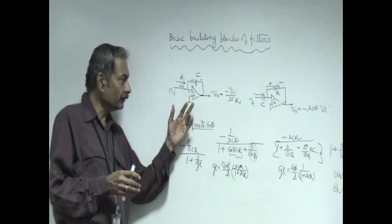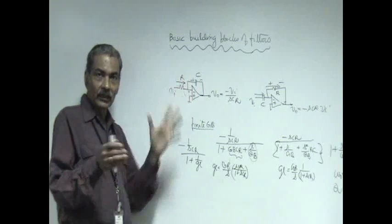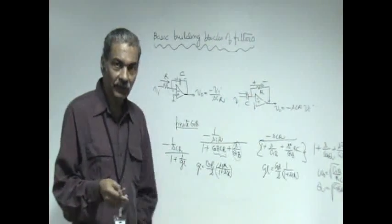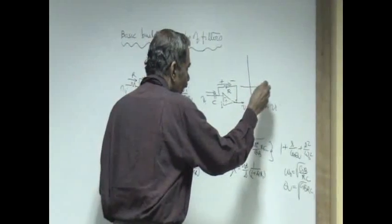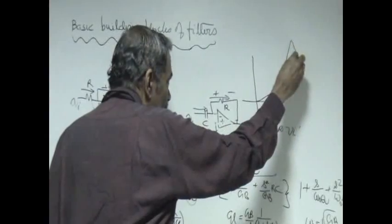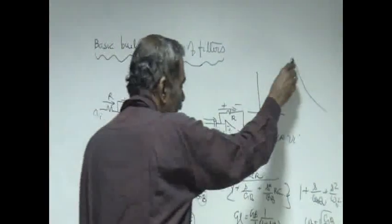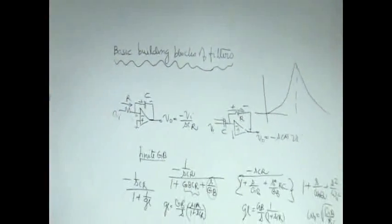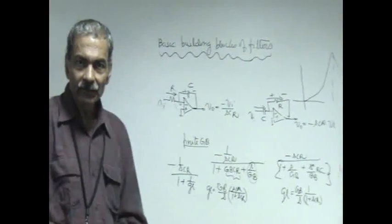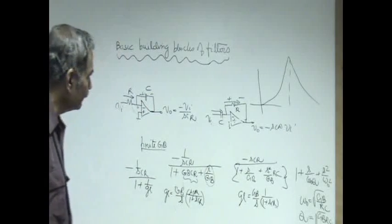We will also obtain the frequency response of the integrator. To prevent it from going into saturation during the frequency response measurement, we will put a large resistance across the capacitor and then obtain the frequency response. For the differentiator, no such precaution is needed, but its frequency response will show a peak because of its non-ideal differentiating behavior — it behaves almost like a bandpass filter. The peak depends upon the Q of the system. Ideally, the frequency response of the differentiator should be a straight line indicating output directly proportional to frequency, but due to the finite gain-bandwidth effect, it will show this peaking response.